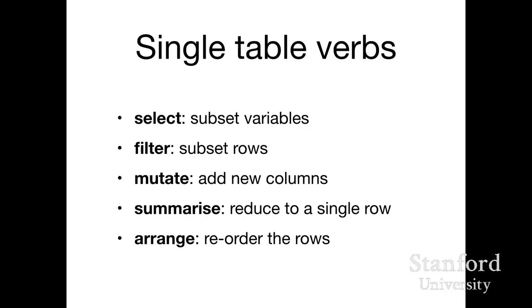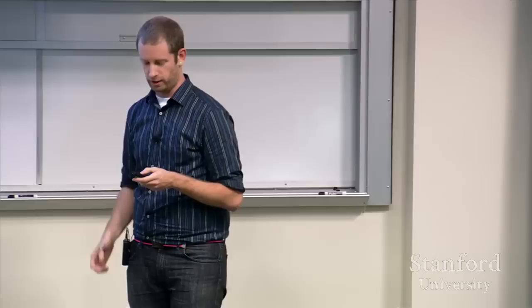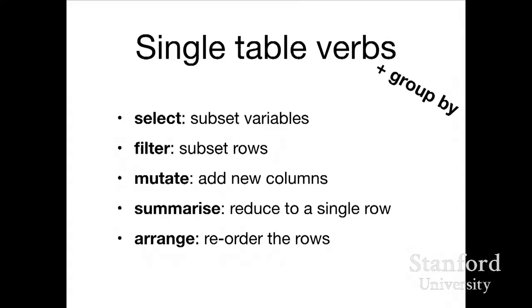There are five key verbs for manipulating a single table of data: select (picking a subset of variables of interest), filter (picking a subset of rows), mutate (adding new columns that are functions of existing columns), summarize (reducing multiple numbers down to a single number), and arrange (changing the order of rows). Data frames are fundamentally not symmetric — you have variables in columns and observations in rows, so the most important operations work on rows and columns differently. Along with these verbs, you need group_by as an adjective — many things you want to do by group: summaries by group, transformations by group, subsets by group.